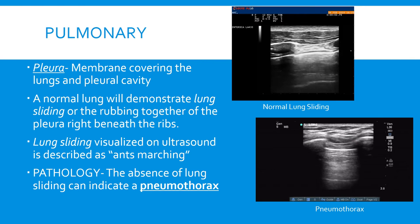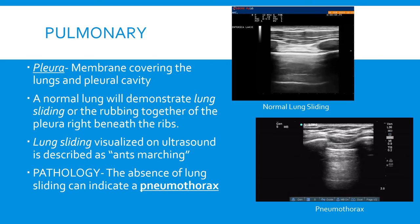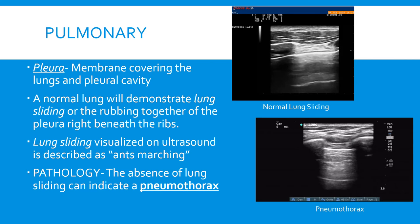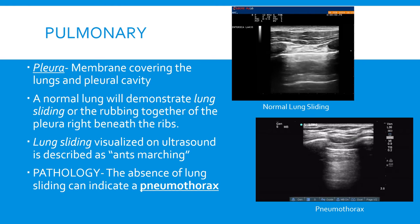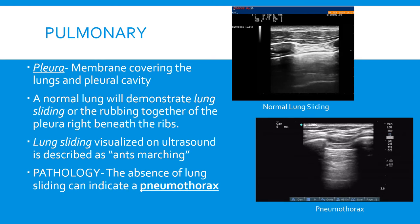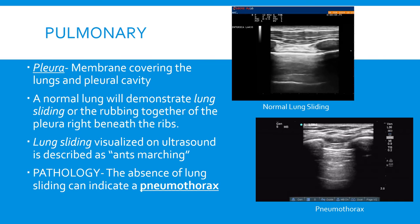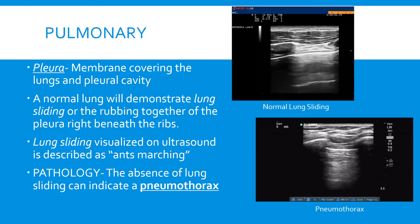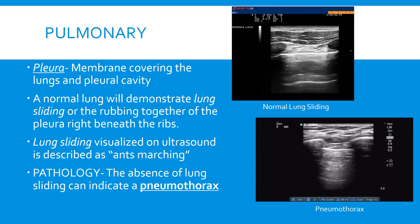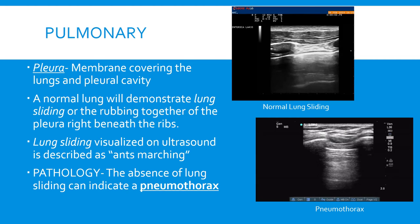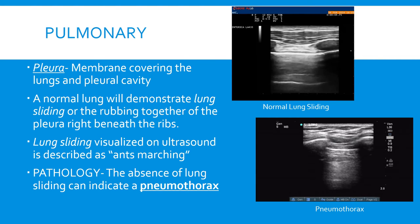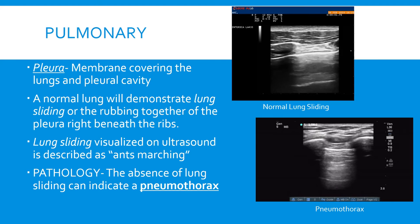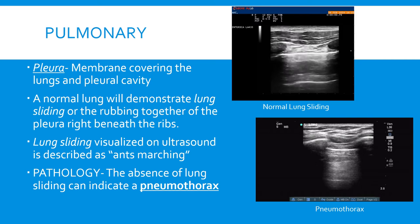Next I want to talk about the pleura and the pleural line. If you look at the picture on the top, you'll see the ribs on either side of the screen with rib shadows behind them, and just inferior to that you'll see a white line — that's the pleural line. It's made up of the parietal and visceral pleura rubbing together, seen as a white stroke moving back and forth. A lot of people describe that as ants marching or ants on a log. This is a normal finding.